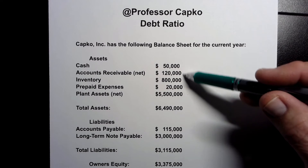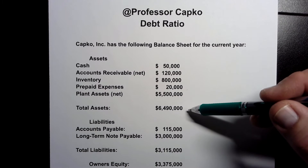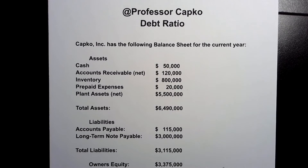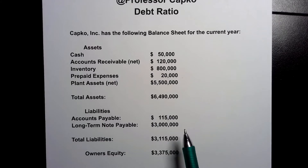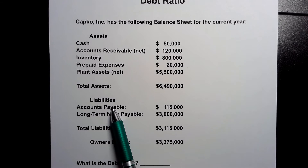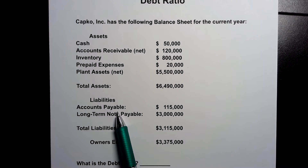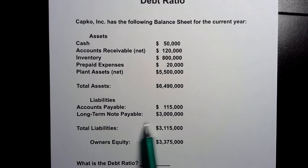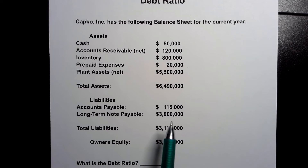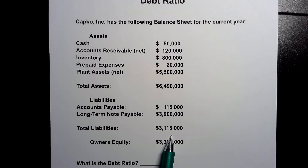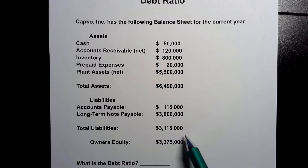So in this case we've added up all of these assets and we have total assets of six million four hundred and ninety thousand dollars. Our balance sheet goes on to tell us our liabilities. In this case there are two accounts — accounts payable, which are things that are owed and payable, and a long-term note payable, which might be a mortgage. That gives us total liabilities of three million one hundred and fifteen thousand dollars.